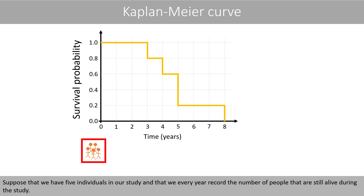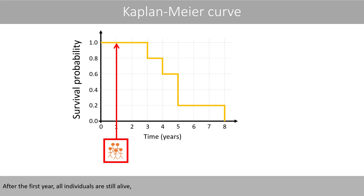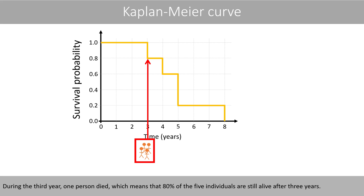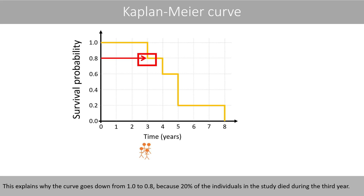Suppose that we have five individuals in our study, and that we every year record the number of people that are still alive during the study. After the first year, all individuals are still alive, which is true also for the second year. During the third year, one person died, which means that 80% of the five individuals are still alive after three years. This explains why the curve goes down from 1.0 to 0.8, because 20% of the individuals in the study died during the third year.